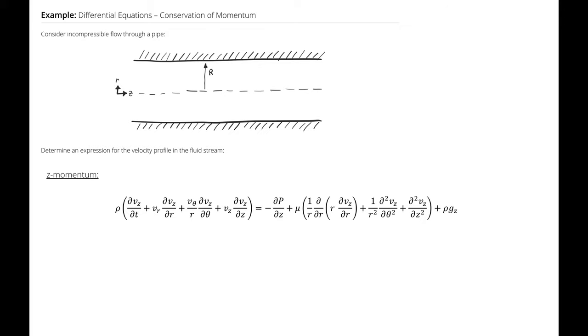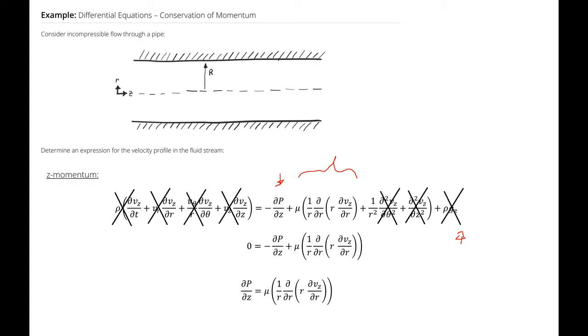Next, I can consider my z momentum. In the z momentum, I'm saying that the velocity in the z direction only changes as a function of r. As a result, everything disappears, including the gravity term because we're neglecting gravity, except for the pressure gradient in the z direction and everything associated with the velocity in the z direction changing with respect to r. That means that zero is equal to negative del p del z plus the viscosity times the quantity one over r times del r del vz del r with respect to r. Rearranging this equation in terms of del p del z, I get del p del z is equal to viscosity times one over r times the quantity rate of change of r del vz del r with respect to r.